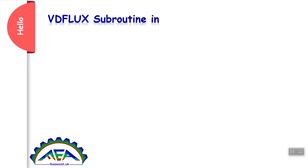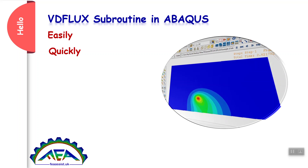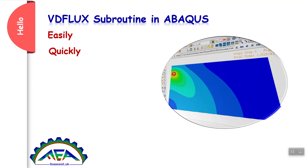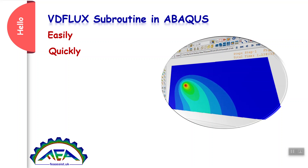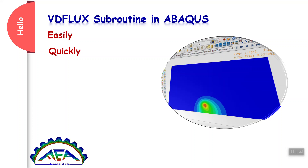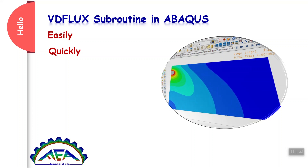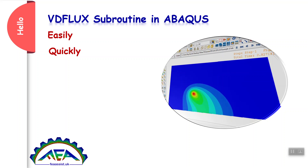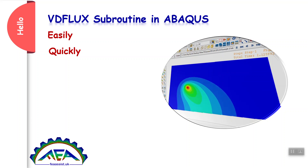Hello, you want to learn VDFlux subroutine in Abacus easily and quickly. VDFlux is a subroutine to have a movable heat source on your plate or sample, used in processes like welding or additive manufacturing. This subroutine is solved by a temperature-displacement explicit solver in Abacus, whereas DFLUX is solved by a standard solver. Stay with us.